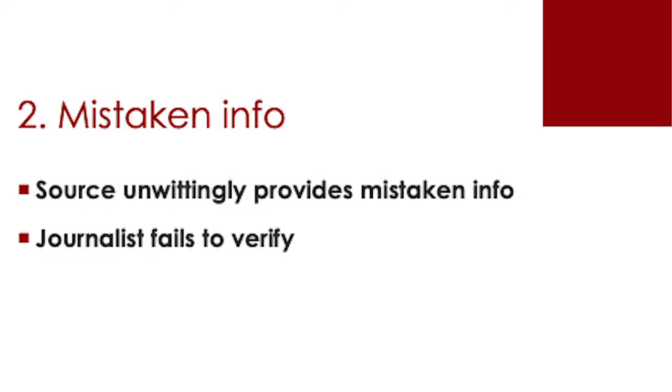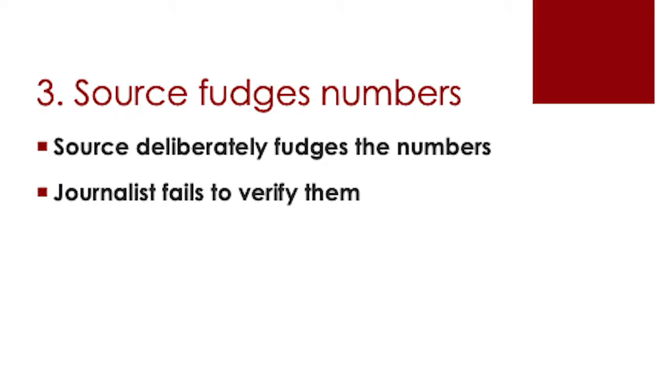The second reason that we make mistakes with numbers in our media work: we're given information that's accidentally wrong, but we use it without checking or verifying it. It wasn't given to us intentionally incorrect, but we didn't follow up, we didn't do the double checking. Now it's out there with our name on it and it's wrong. The third most common reason media writers get math wrong: someone gives us intentionally misleading or wrong numerical information, and again we use it without verifying or double checking. It's out there with our name on it and it's wrong — and even worse than scenario two, it was given to us intentionally wrong.